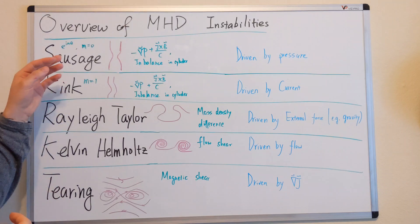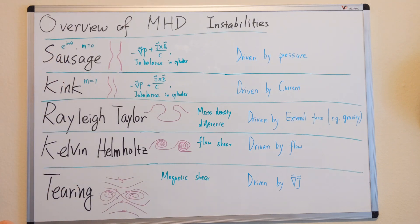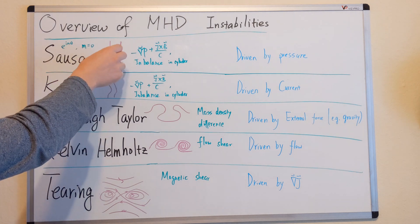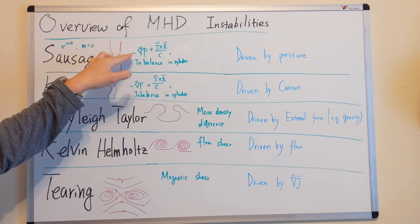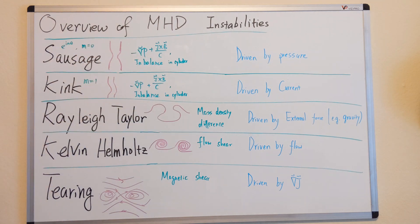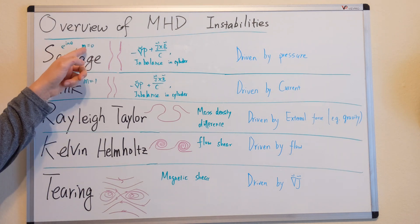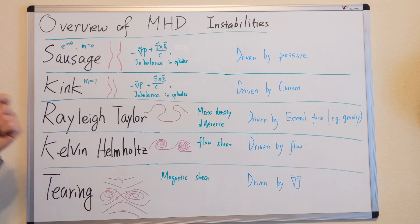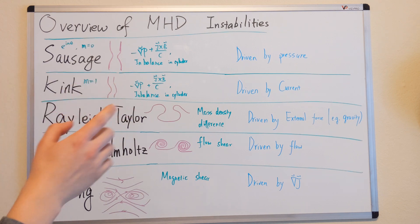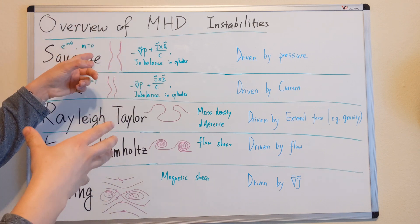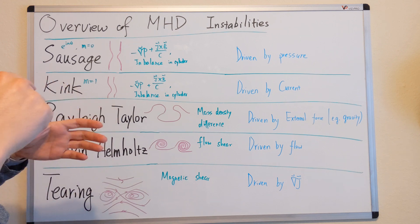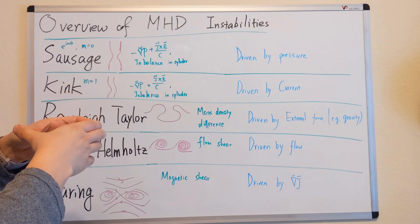We studied the cylindrical plasma column in ideal MHD. We pinch it a little bit and then it becomes unstable — basically due to the imbalance of the pressure gradient and J cross B. The difference between sausage and kink is: one is M equal to zero, the other is M equal to one. M equal to zero has cylindrical symmetry, symmetric around theta. If you perturb inward, the whole thing gets in and it becomes like a sausage.